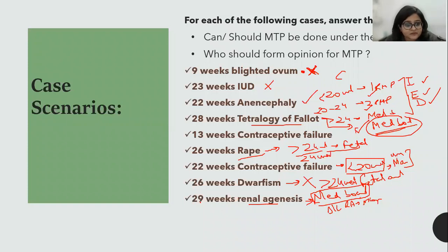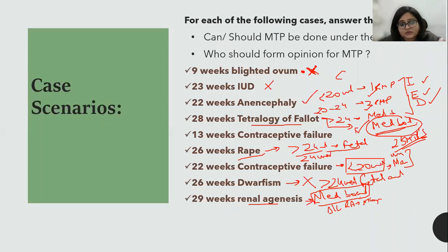A student asks: is there a minimum number of MTPs a person must have assisted to conduct an MTP? Yes, from the previous act: a minimum of 25 MTPs must have been conducted. This applies specifically to MBBS doctors. This has not been changed in the new MTP Amendment Act — it remains the same and has come as an exam question previously.